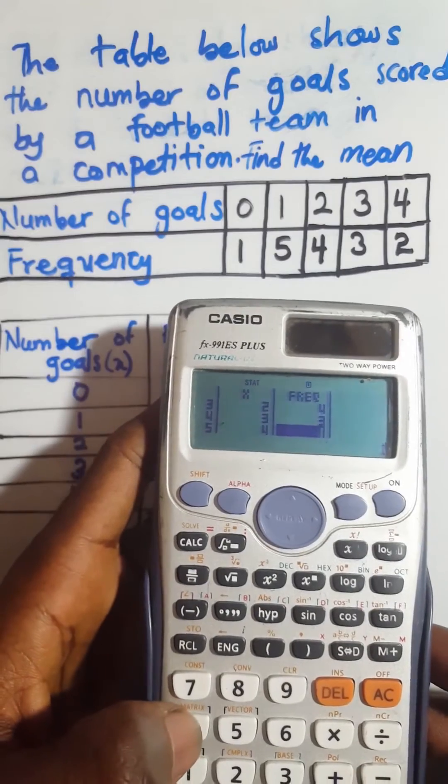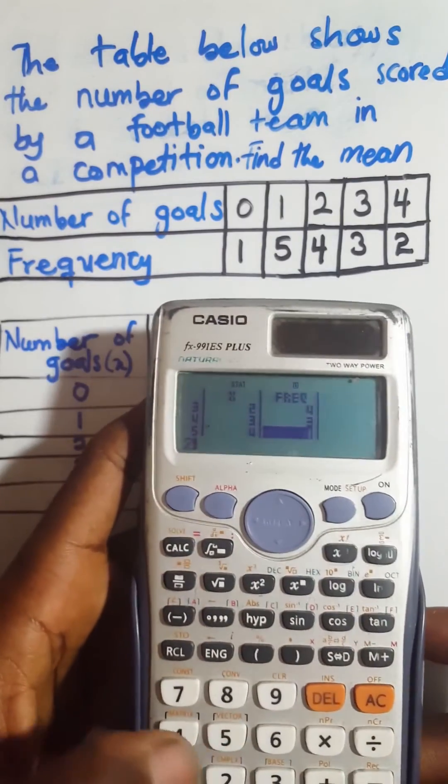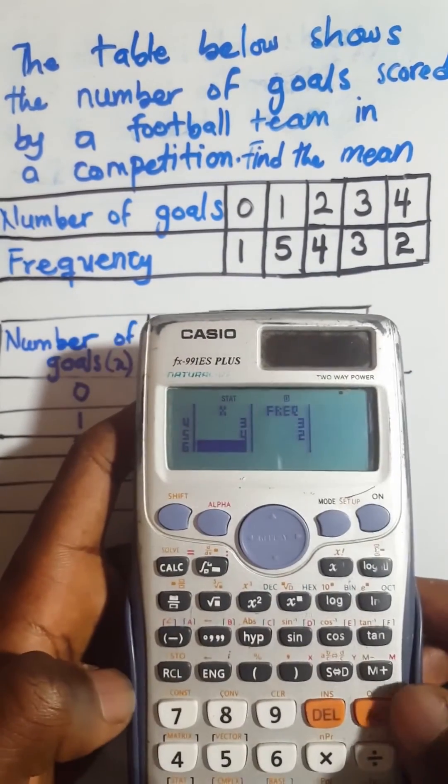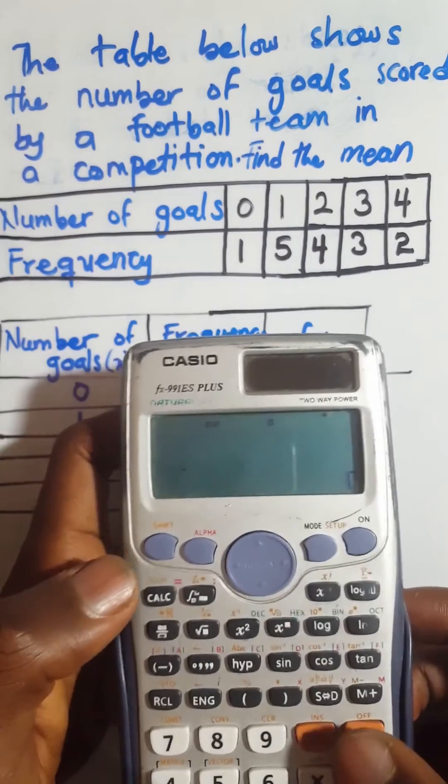And the frequency of 4 is 2, you press 2 and press equal to. So the next thing you do is you press AC. Press AC, your data is not lost, don't worry.